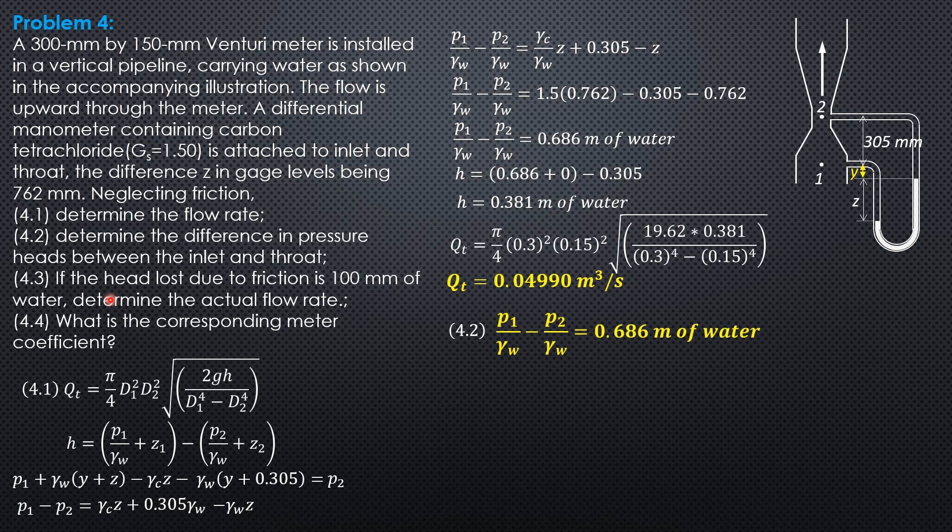Then for 4.3, if the head loss due to friction is 100 mm of water, determine the actual flow rate. The actual flow rate is same equation. This is now actual when we replace H by quantity H minus head loss. And since we already computed H, so it is just pi over 4, 0.3 square, 0.15 square times square root of 19.62 times quantity 0.381 minus 0.1 meter of water, 100 mm, over 0.3 to the fourth minus 0.15 to the fourth.